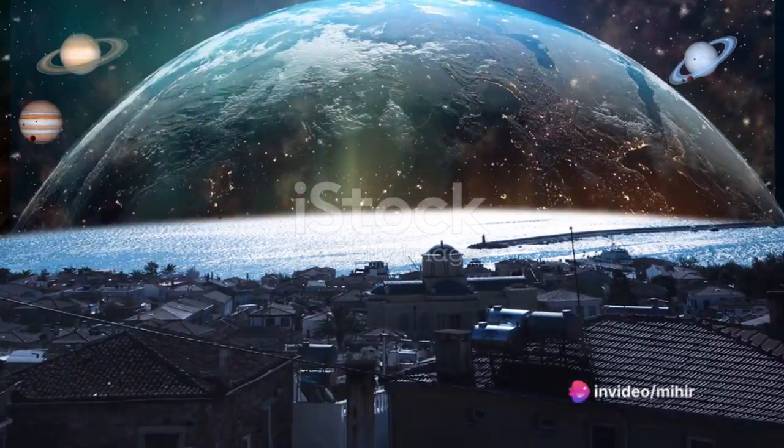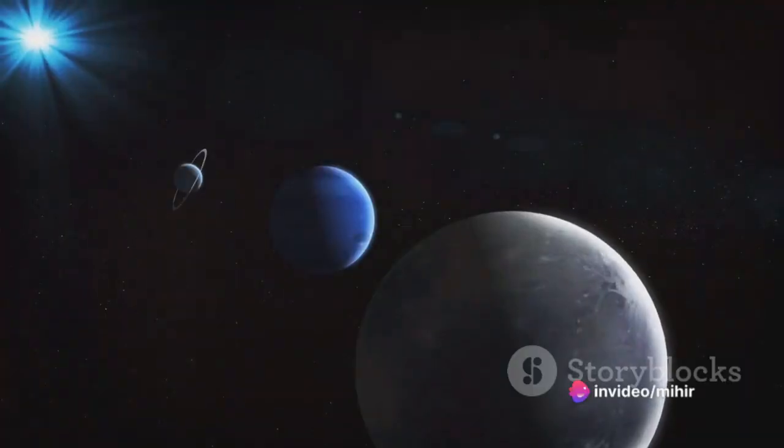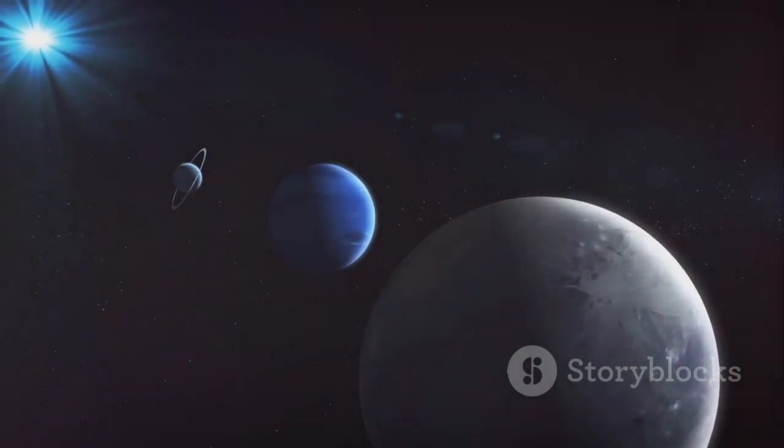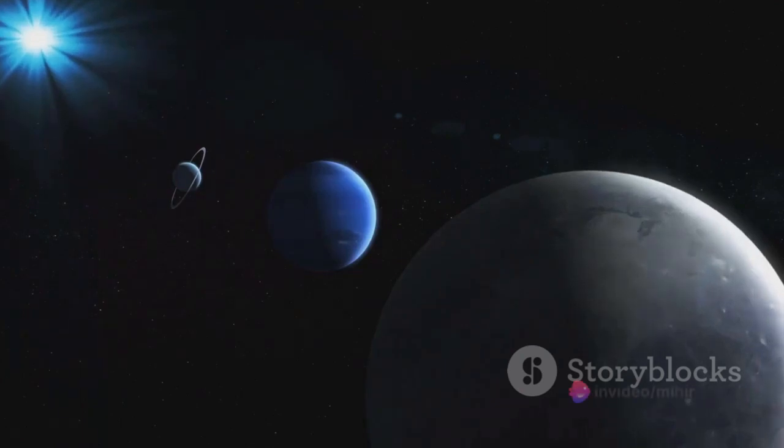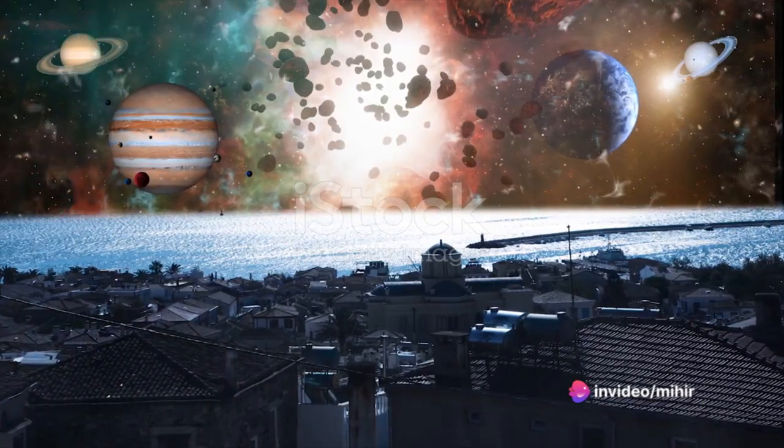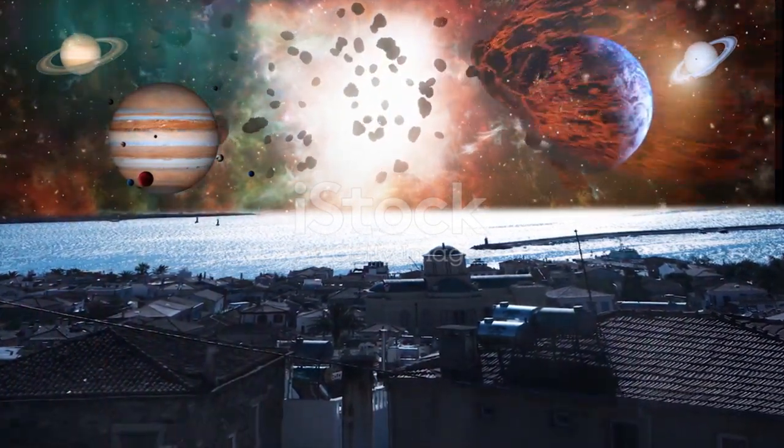We've journeyed through the rocky world, starting with Mercury, the smallest planet yet with a day longer than its year. Venus, our closest neighbor, shrouded in a thick, toxic atmosphere where the Sun rises in the west and sets in the east. Our home, Earth, the blue marble teeming with life and diversity. And Mars, the red planet with the tallest volcano and deepest canyon in the Solar System.